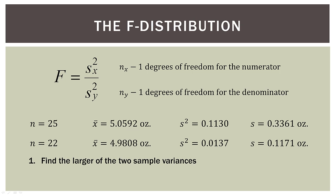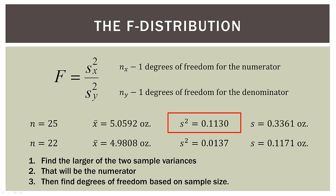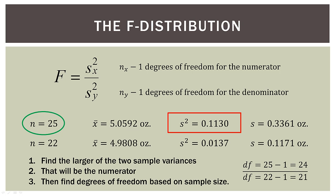So what we do is we find the larger of the two sample variances — in this case, machine one — and that will be the numerator in the ratio. Then we find the degrees of freedom based on sample size. For machine one, the sample size was 25, so it goes in the numerator, giving us degrees of freedom of 25 minus one, which is 24. And then in the denominator, it's 22 minus one, because our sample size was 22 for the other machine. So top and bottom, we have degrees of freedom of 24 and degrees of freedom of 21.